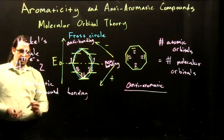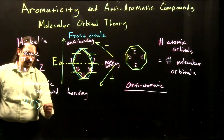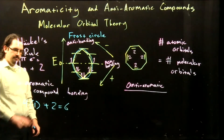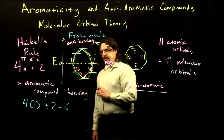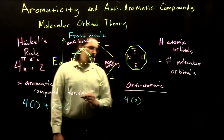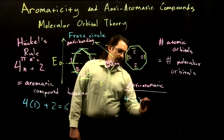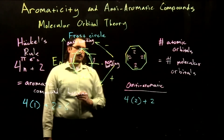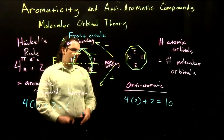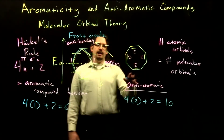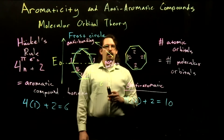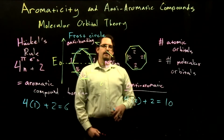For example, if n is equal to one, we get four times one plus two, or six — that would be the case for benzene. Benzene has six electrons and is aromatic. If we look at our cyclooctatetraene with n equal to two, four times two plus two gives us ten. So we can have six electrons or ten electrons, but we can't have eight electrons. Our cyclooctatetraene does not fit Hückel's rule and so it is anti-aromatic.